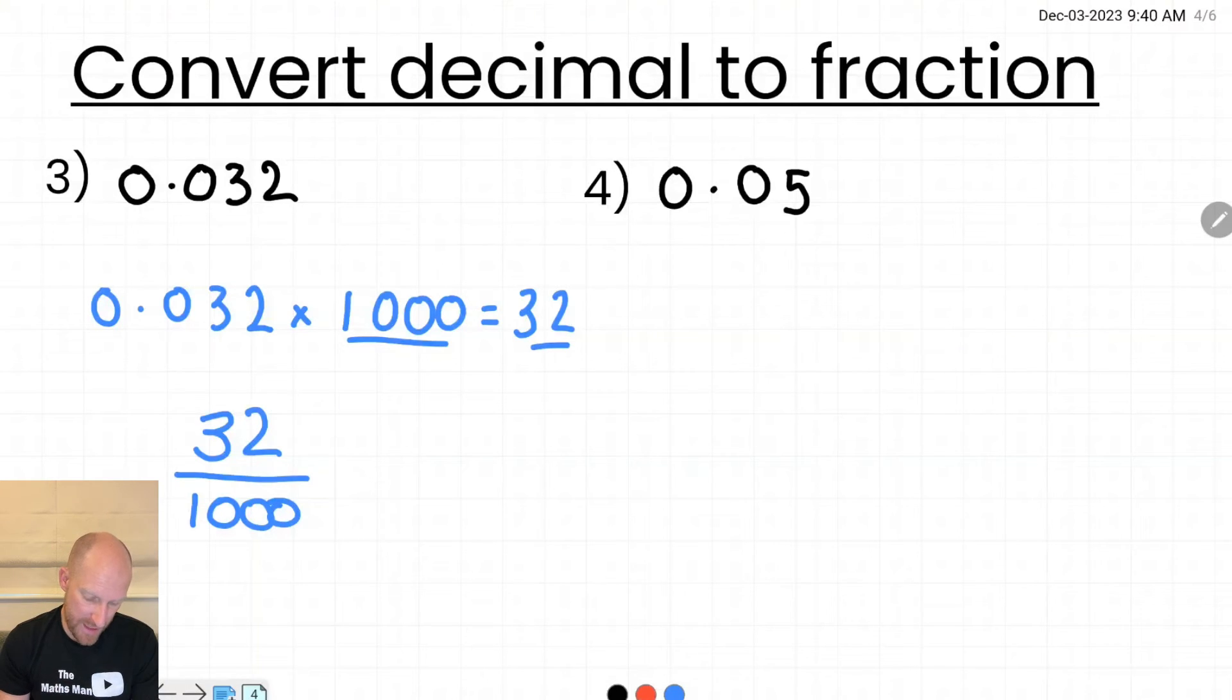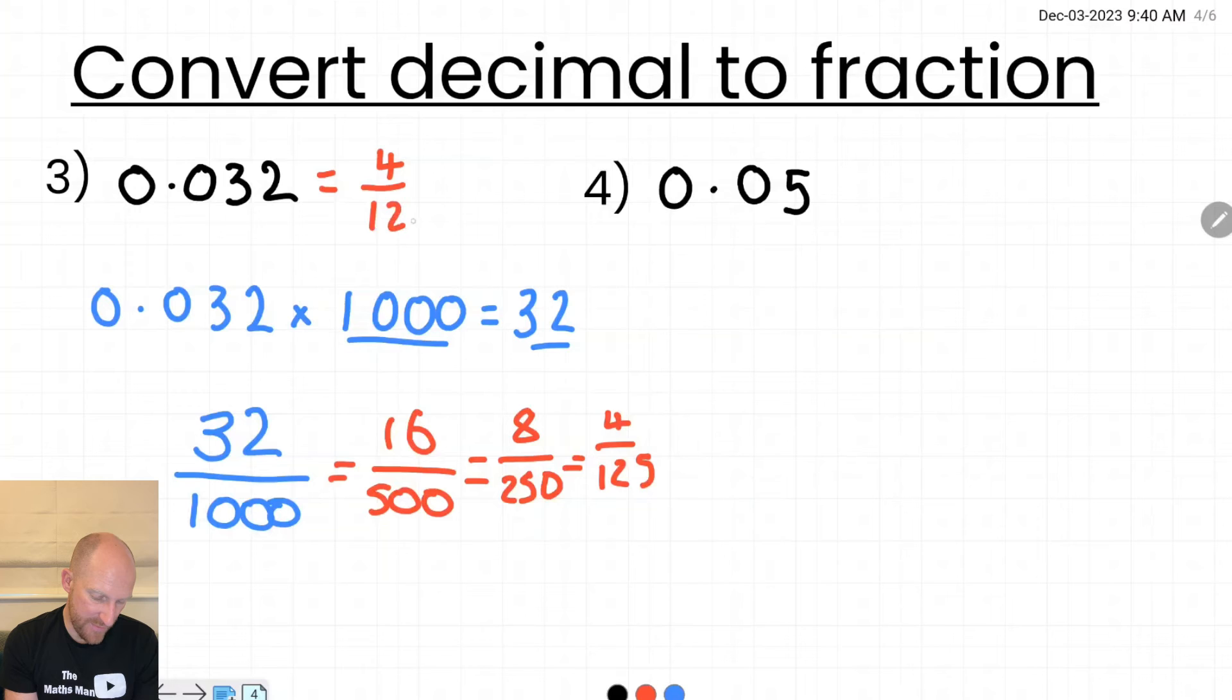And again I'm going to use the halving technique to try and simplify this fraction. So halving both the numerator and the denominator until I get a fraction that is something a little more reasonable. And there we have 4 one hundred and twenty-fifths.